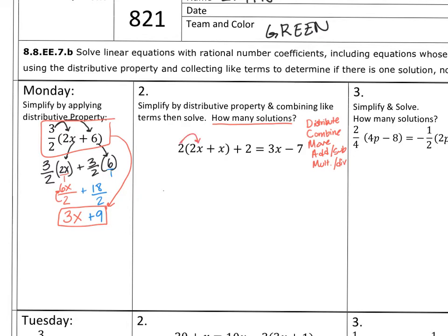I'm going to distribute this 2 to both of these. Now, when you're not working with fractions, you don't have to rewrite it like I did over here. When you have a fraction, you want to do this so that you don't mess up. But here, 2 times 2x is just 4x. And 2 times x is just 2x. So let me repeat that. So we have 2 times 2x, that's 4x. 2 times x, that's just 2x.